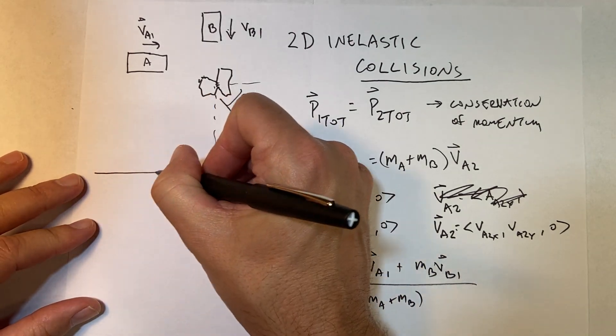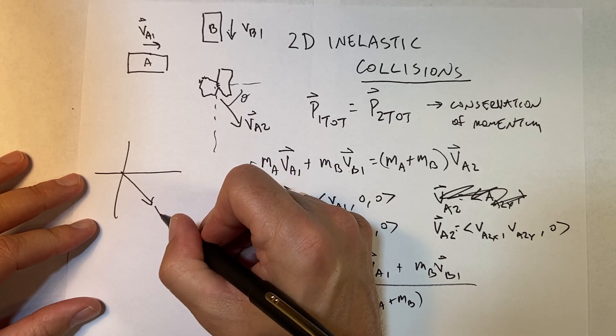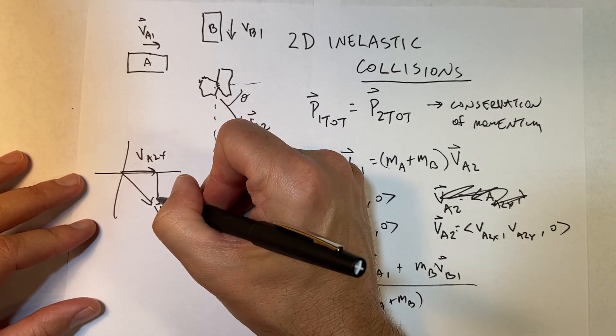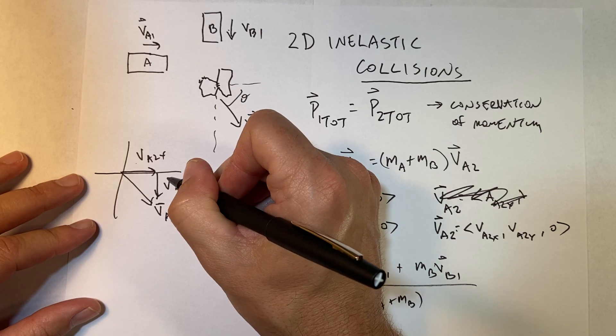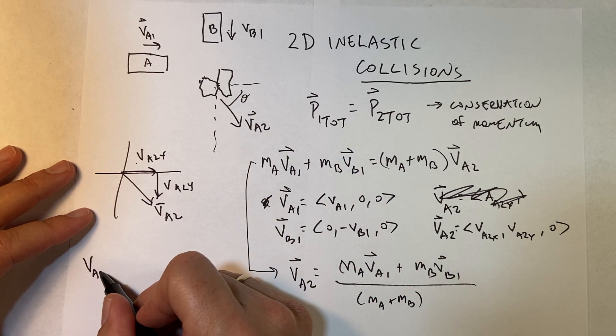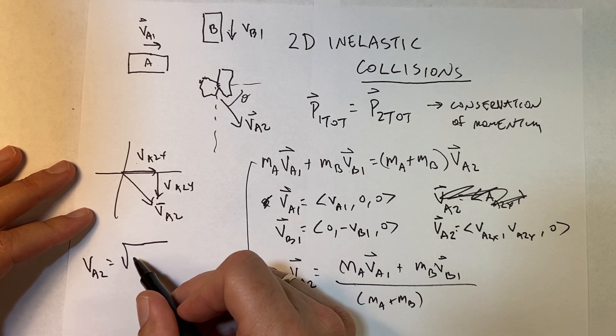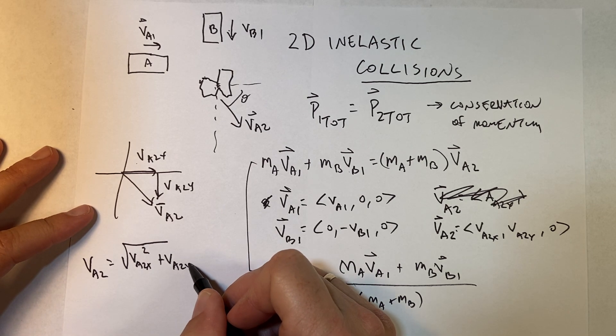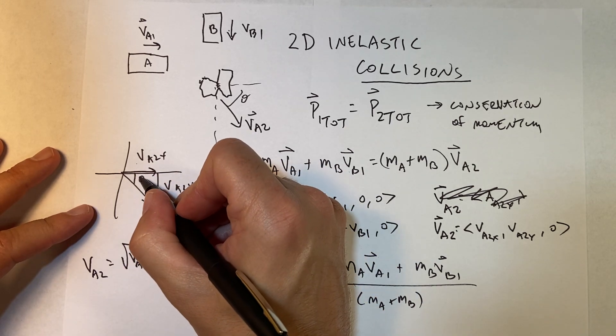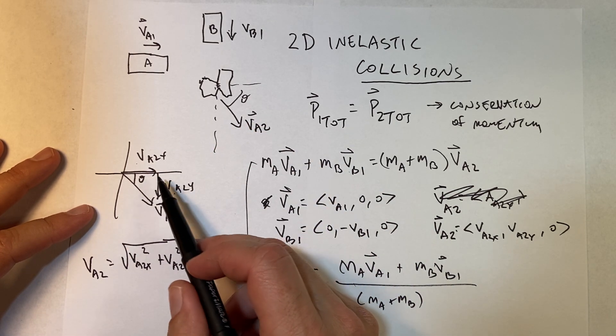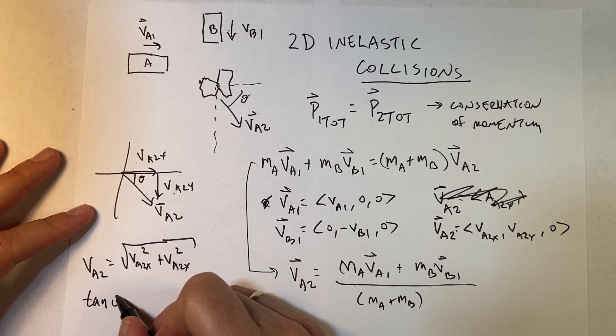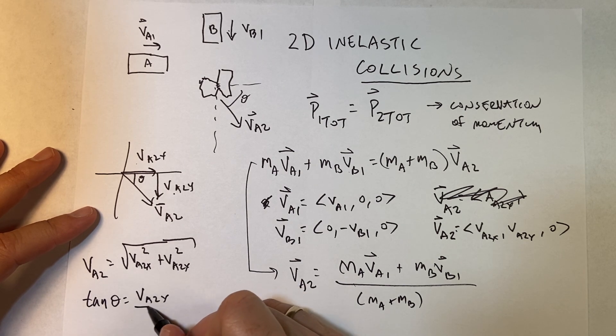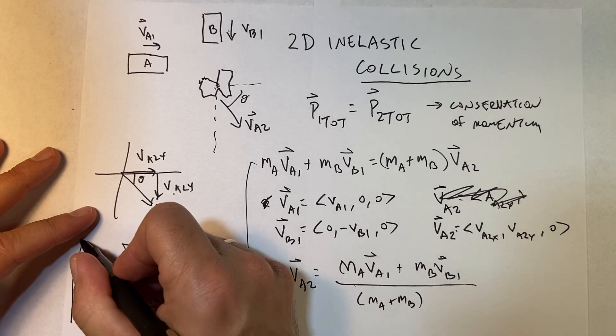v_A2 vector—well, this is the x-component, v_A2x. This is the y-component, v_A2y. So the magnitude v_A2 is going to be equal to the square root of (v_A2x² + v_A2y²). And this angle theta—I could find that. The tangent of theta is going to be opposite over adjacent, so tangent of theta is going to be v_A2y divided by v_A2x. Done.